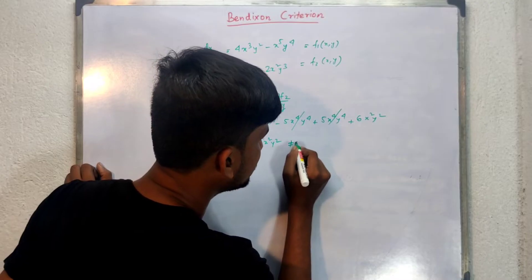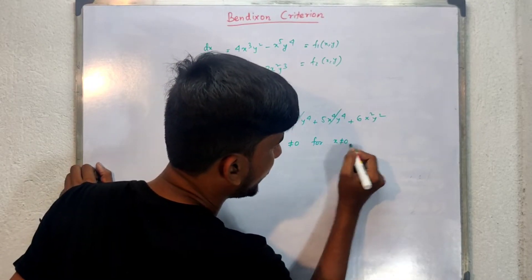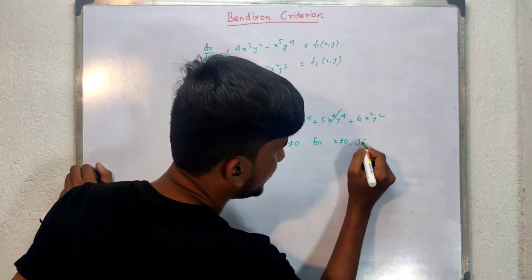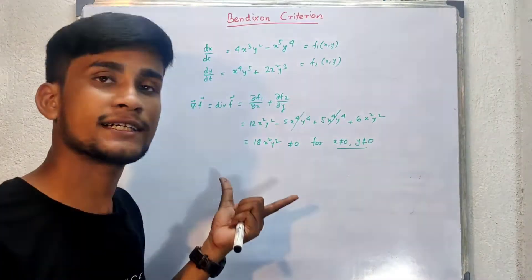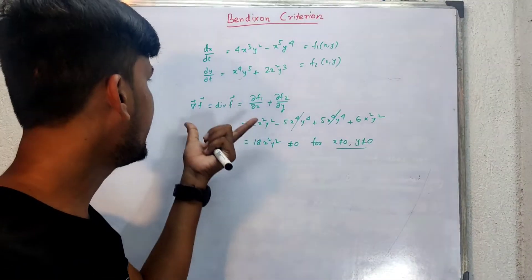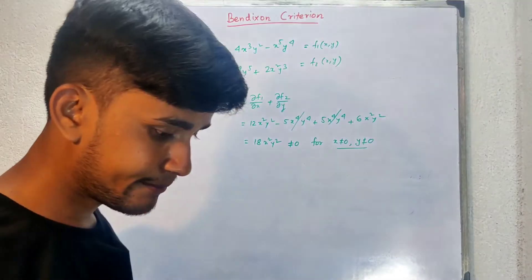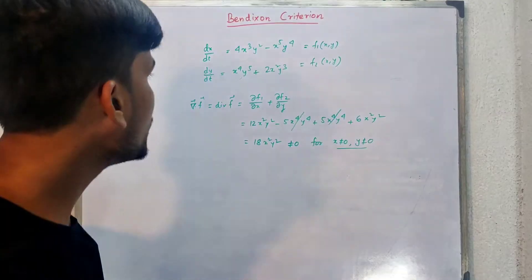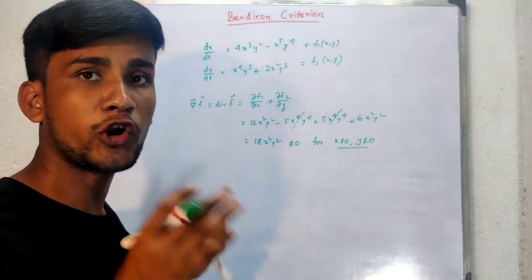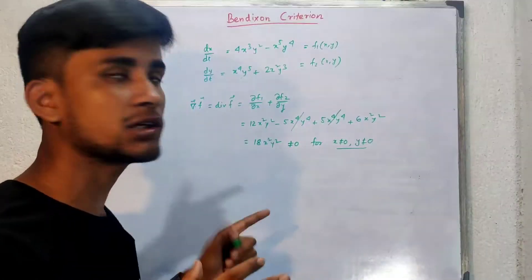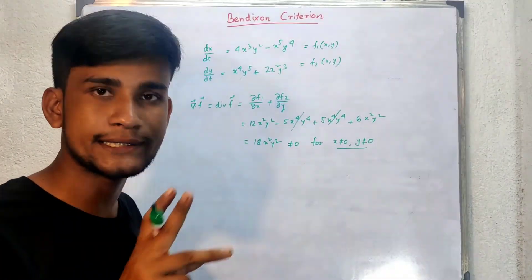Since the divergence equals 18x²y², which never vanishes — it does not change sign and is not identically zero — the Bendixson criteria tells us that this system has no non-trivial periodic solutions; that is, it has no closed trajectories.